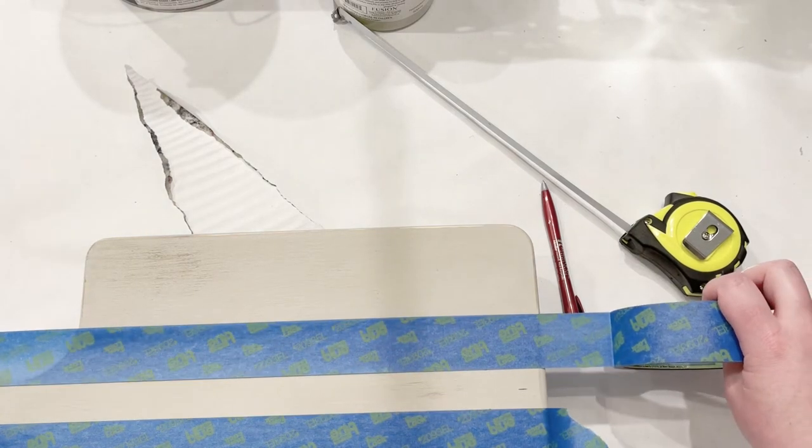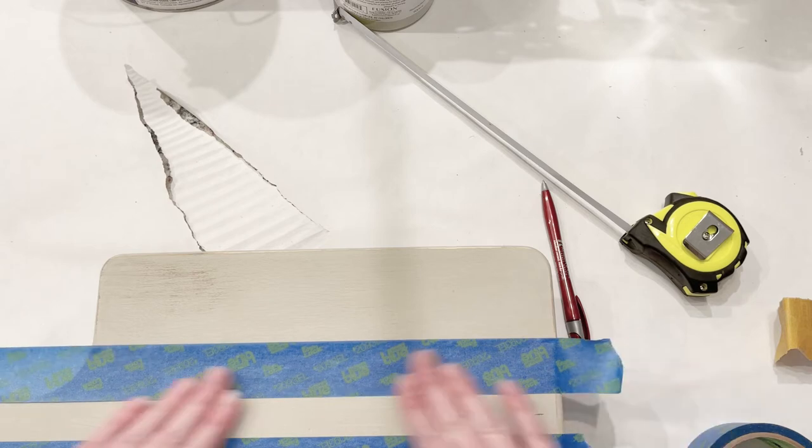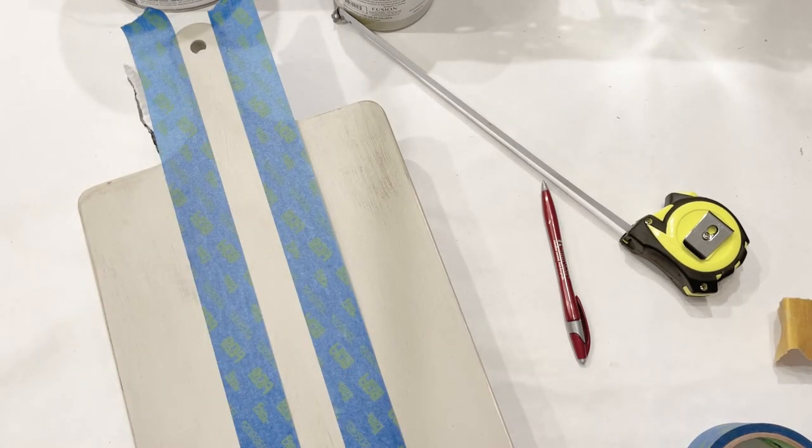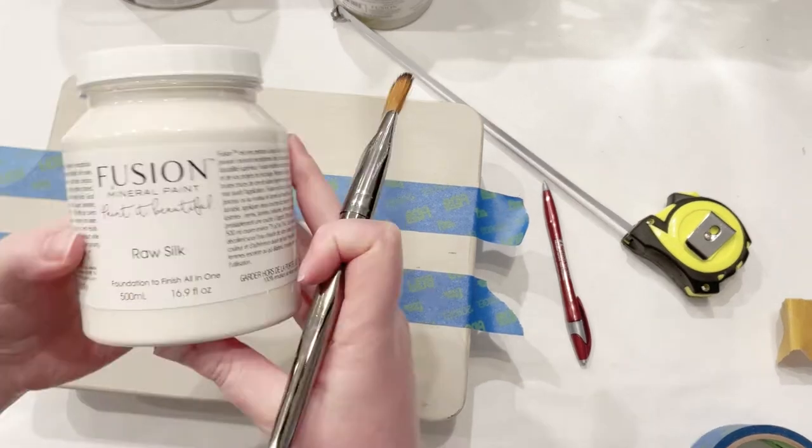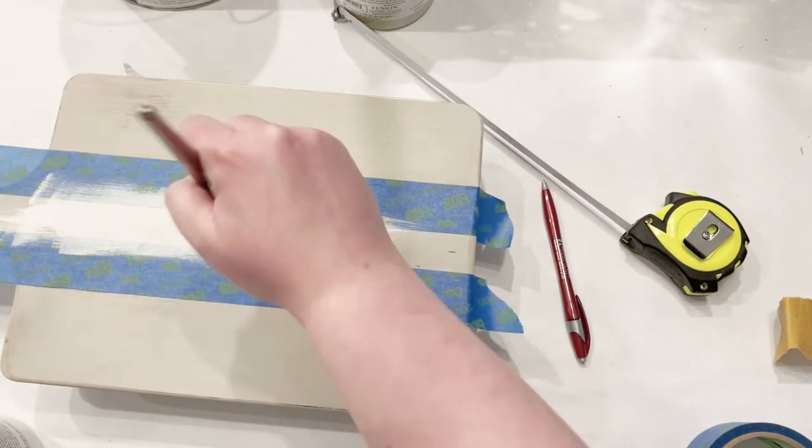Make sure once you lay your tape down, that you really smooth out that inside seam because we don't want any paint leaking underneath the tape or you'll have to do touch ups. If you can get it on there really well, it will look better and give a cleaner look.